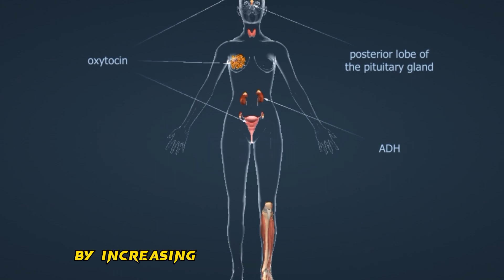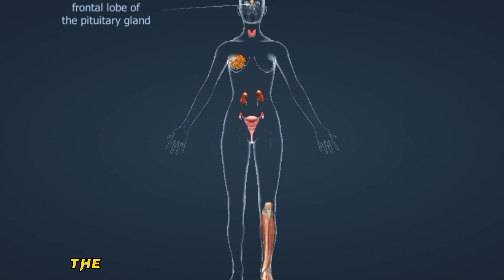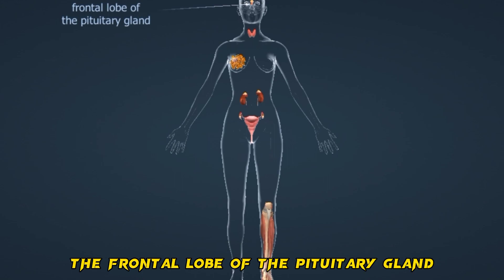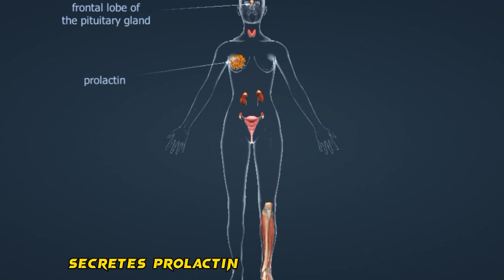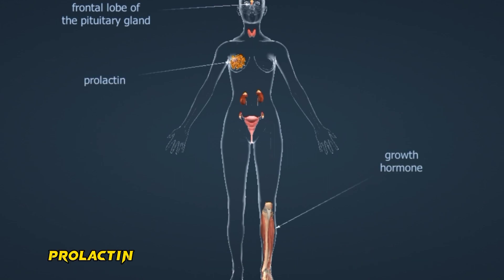ADH is also known as vasopressin. It reduces the amount of urine produced by increasing water absorption in the kidneys.